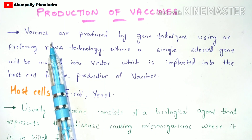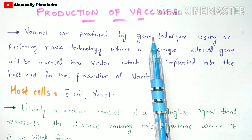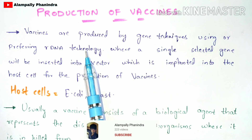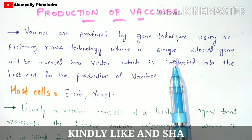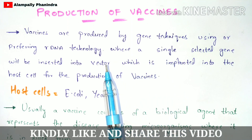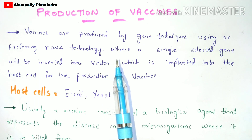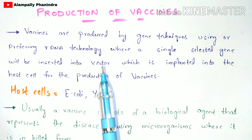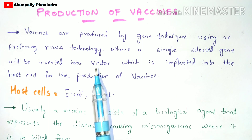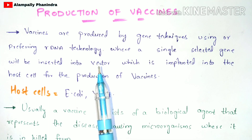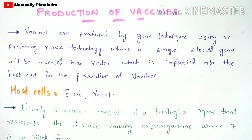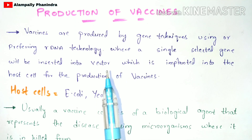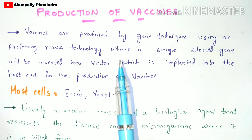By using rDNA technology, a single selected gene is chosen from a particular type of virus. That gene will be isolated and inserted into the vector — the vector is nothing but the plasmid. Once the selected gene is inserted into this vector, it is called a recombinant vector. That recombinant vector will be implanted into the host cells, which will be cultured and placed in the fermentation tank for the production of the vaccines.